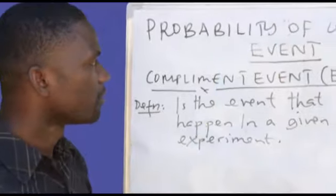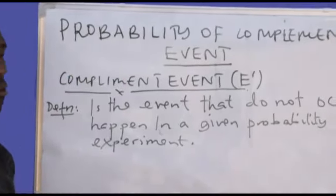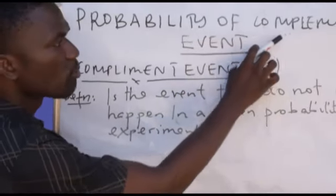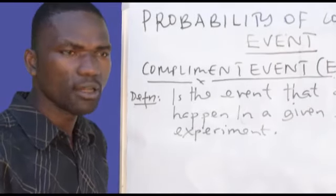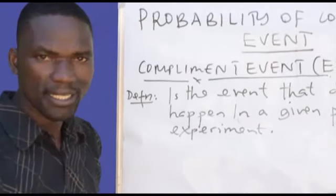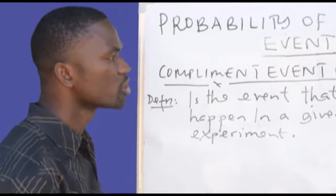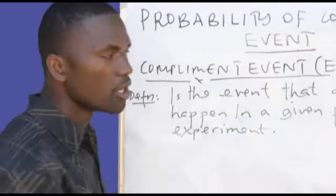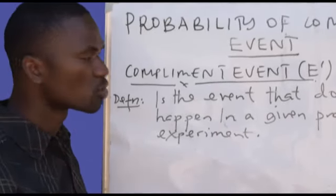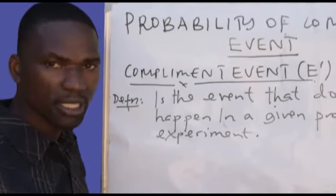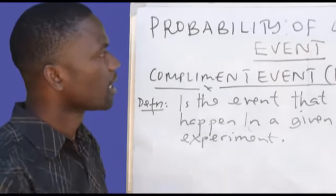In order to understand probability of complement events, first of all let us check what the word 'complement event' means. I'll start by defining complement event, and from there we can work on the probability of that kind of event. Complement event, which is noted by E-dash, relates to sets — you can try to figure out the definition from set symbols. The knowledge is similar, and we are going to modify it a little bit to fit the issue of probability.